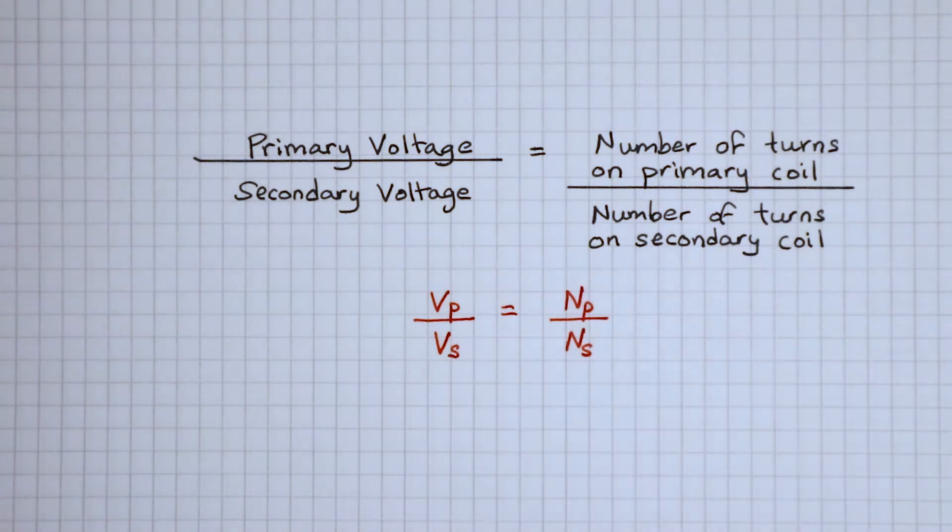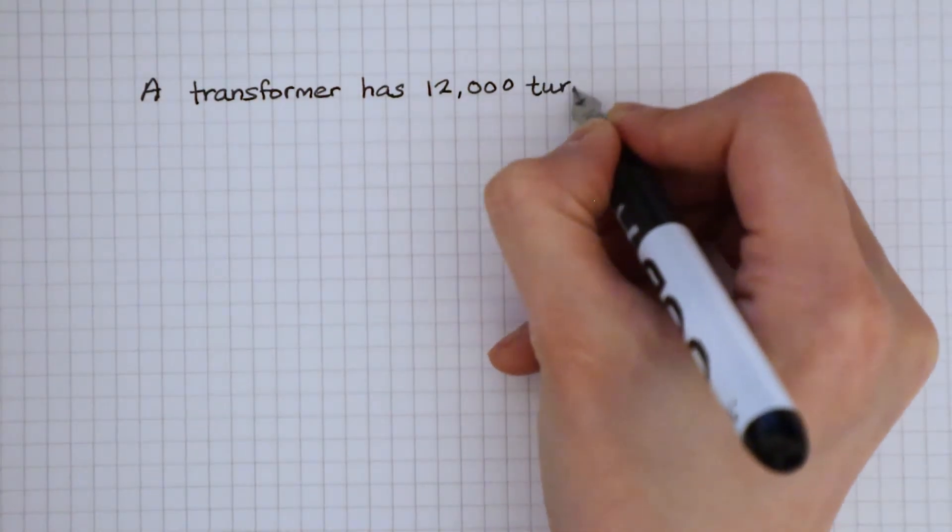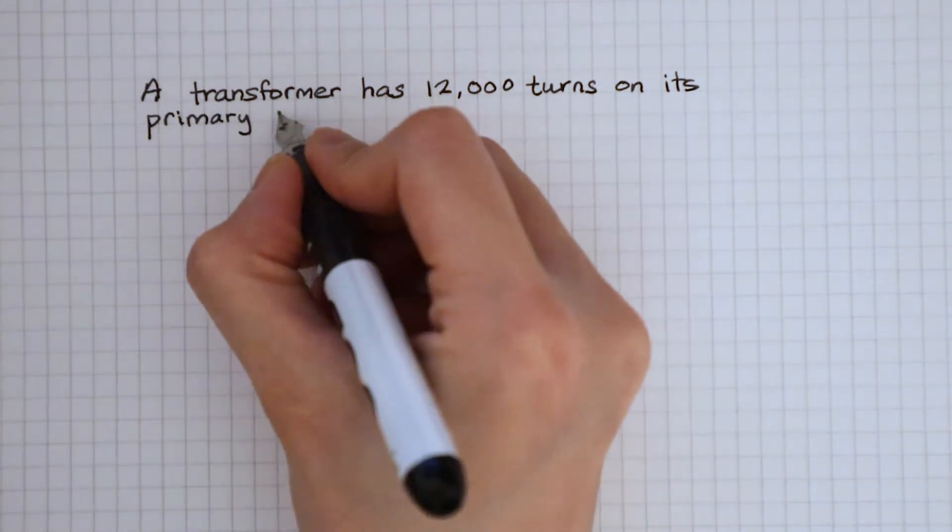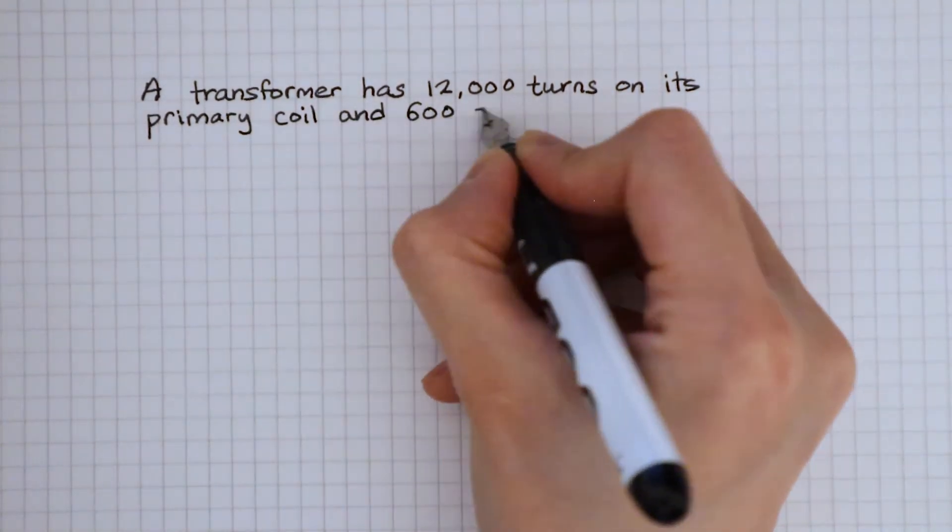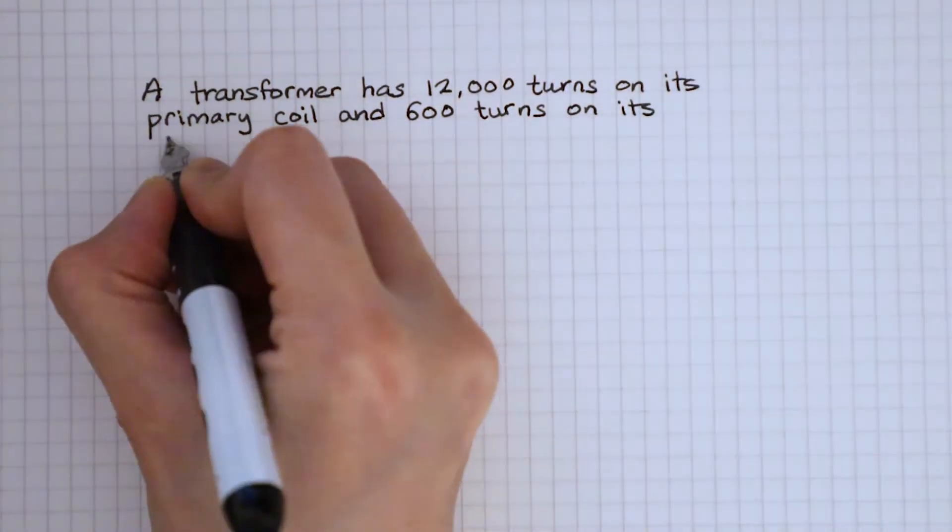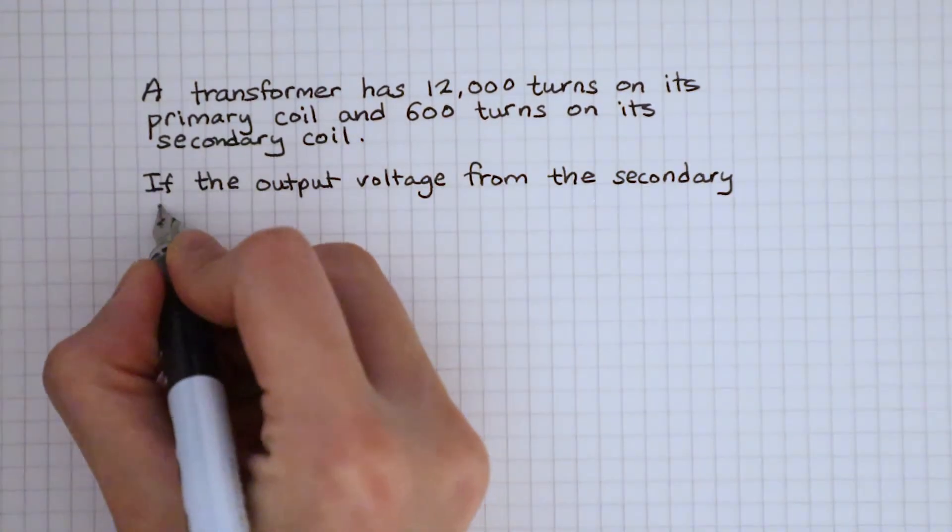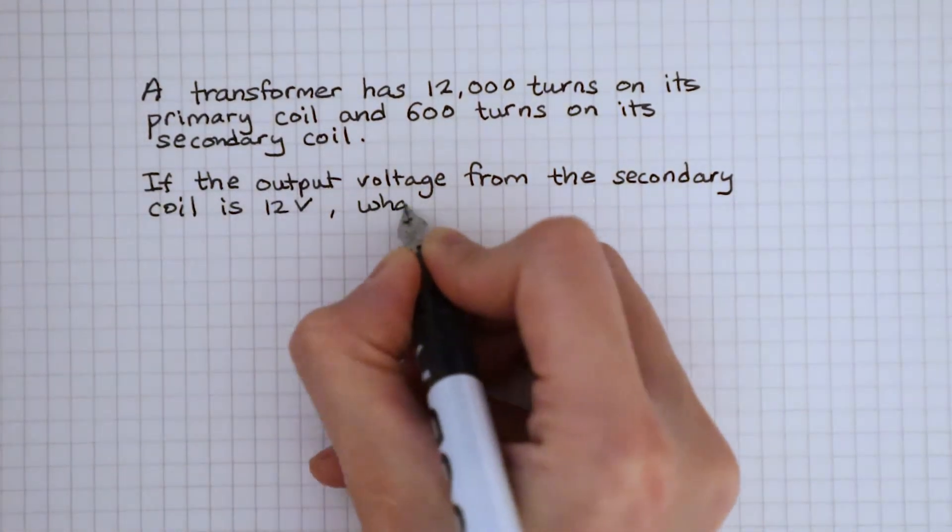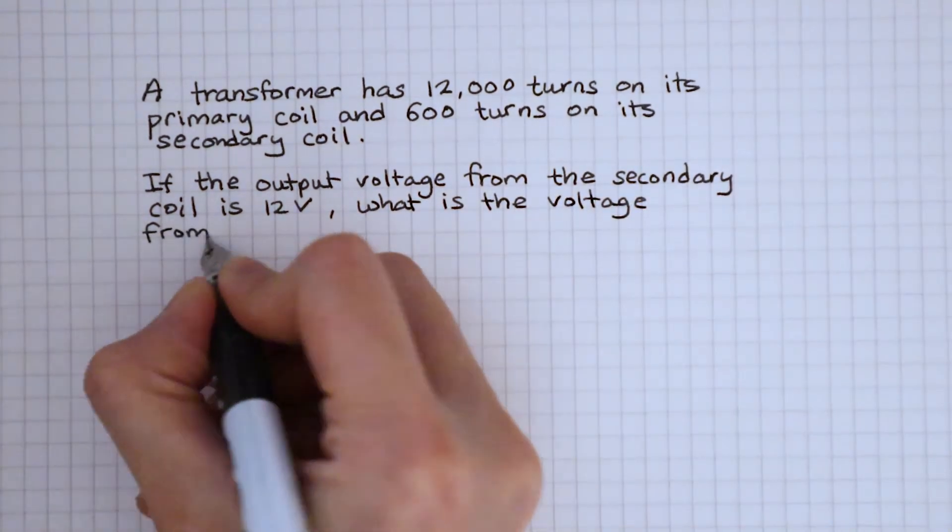Here's an example question. A transformer has 12,000 turns on its primary coil and 600 turns on its secondary coil. If the output voltage from the secondary coil is 12 volts, what is the voltage from the primary coil?